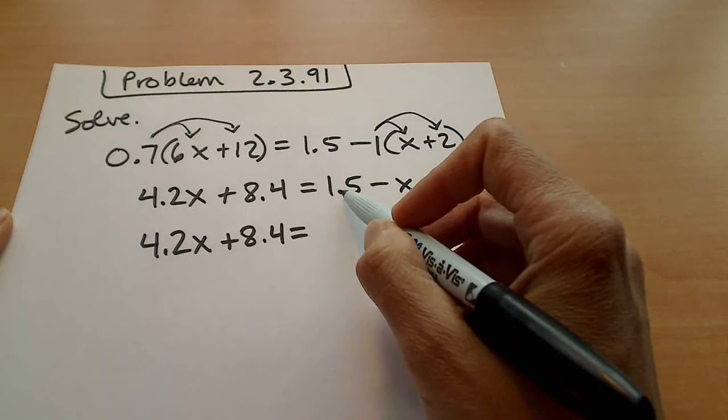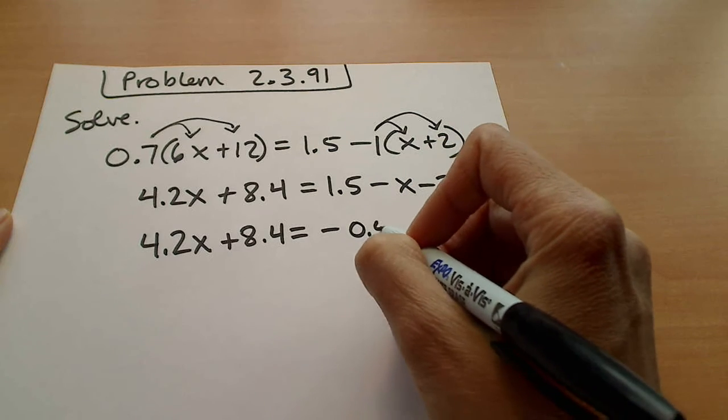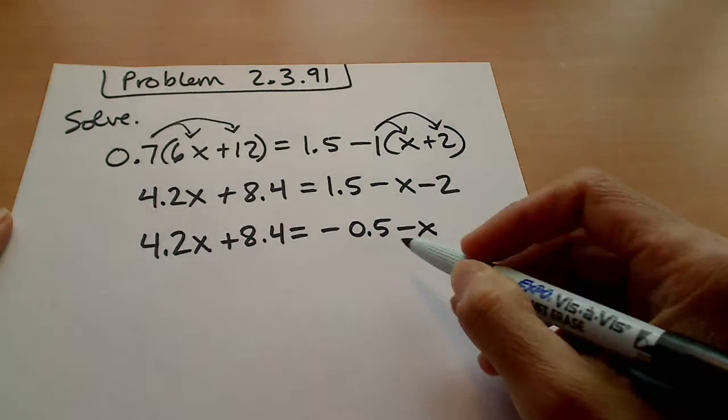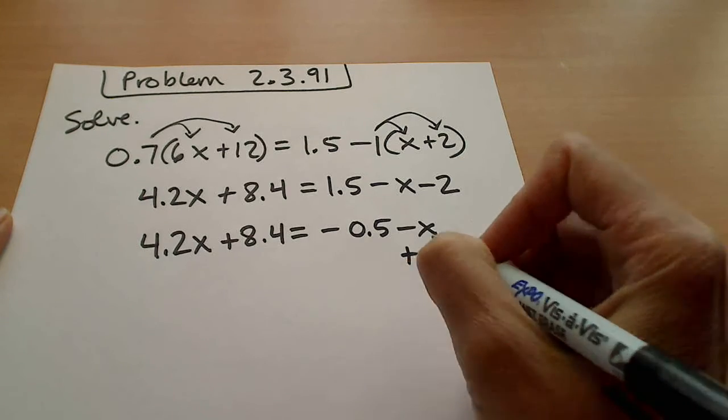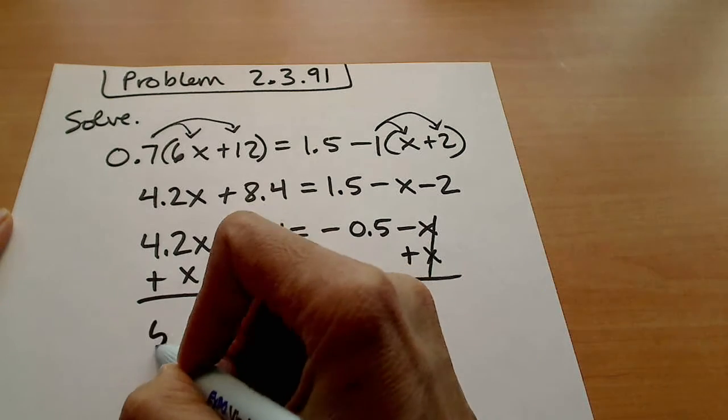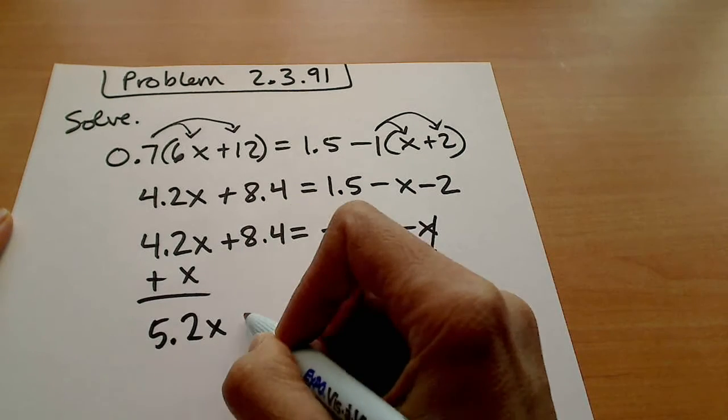Okay, so let's go ahead and take this x and move it over because we're trying to solve for x. So we have 5.2x plus 8.4 equal to negative 0.5.